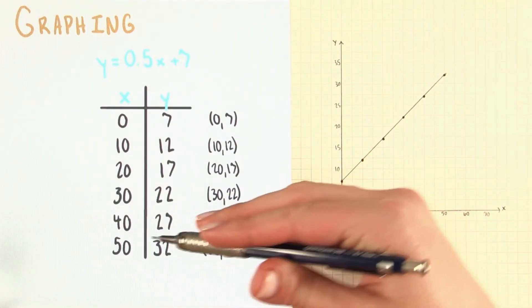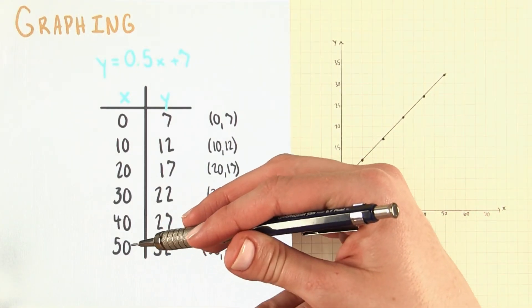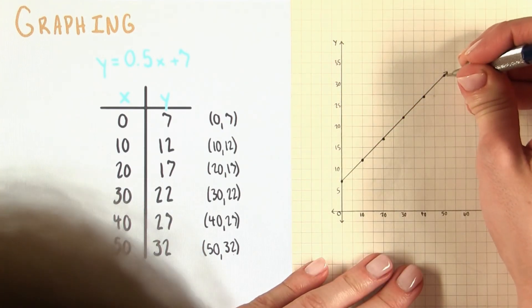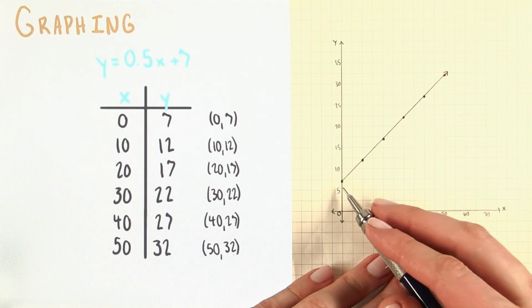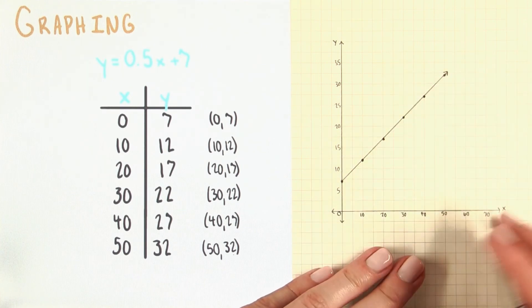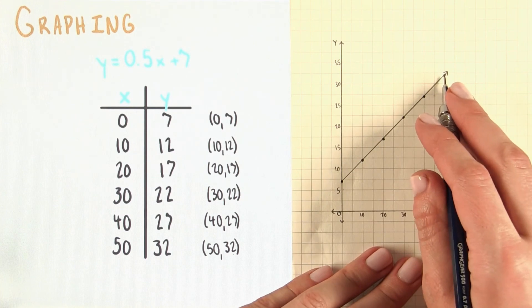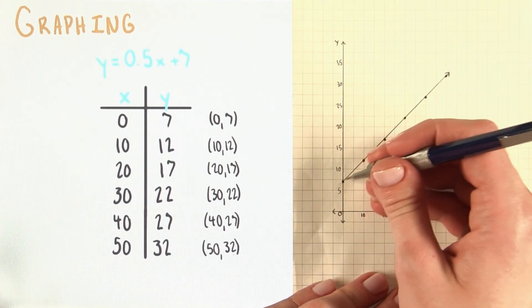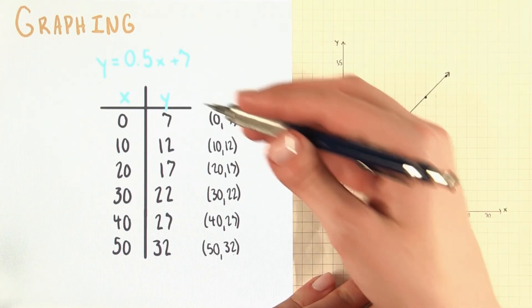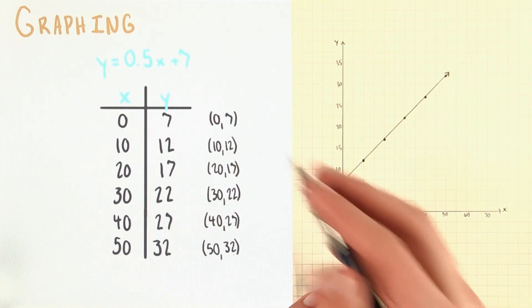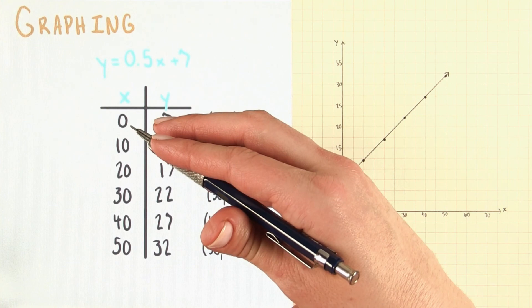Now since conceivably, Grant could pack more than 50 pairs of glasses wipers in his suitcase, I'm going to draw an arrow on the end of the line right here. This indicates that the graph could continue increasing in the x direction, and in this case the y direction as well, past this last point that we graphed. I'm not going to put one over on this end though, because for the purposes of the data we're dealing with, we're not going to have negative x values. Grant can't pack a negative number of glasses wipers in his bag.